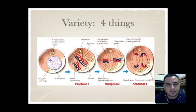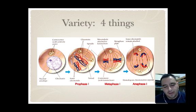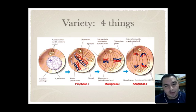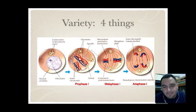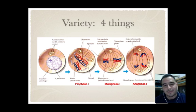Hello students. This tutorial is going to cover the four things that are very important for variety: the law of independent assortment, the law of segregation, crossing over, and the fourth one which is fertilization. Some students had some difficulty with this and I hope this tutorial clears things up.